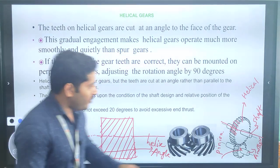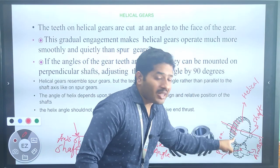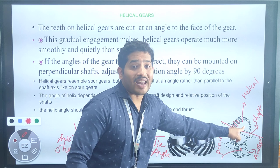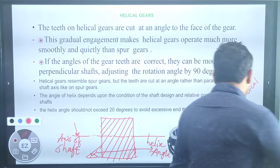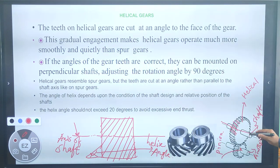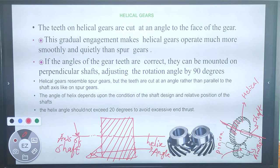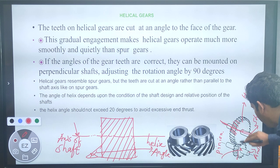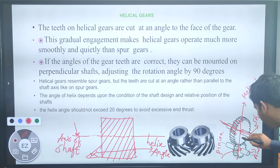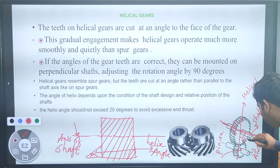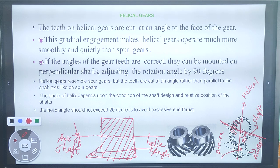If the angle of the gear teeth is correct, they can be mounted on perpendicular shafts, adjusting the rotating angle by 90 degrees. The shaft makes an angle of 90 degrees from the axis of the shaft — the shaft should be perpendicular, making an angle of 90 degrees with the axis of the other shaft.